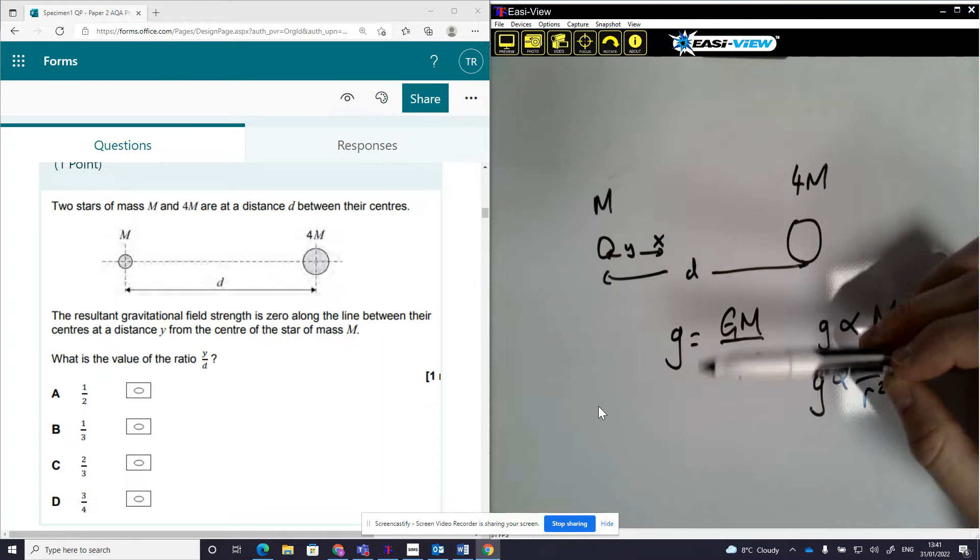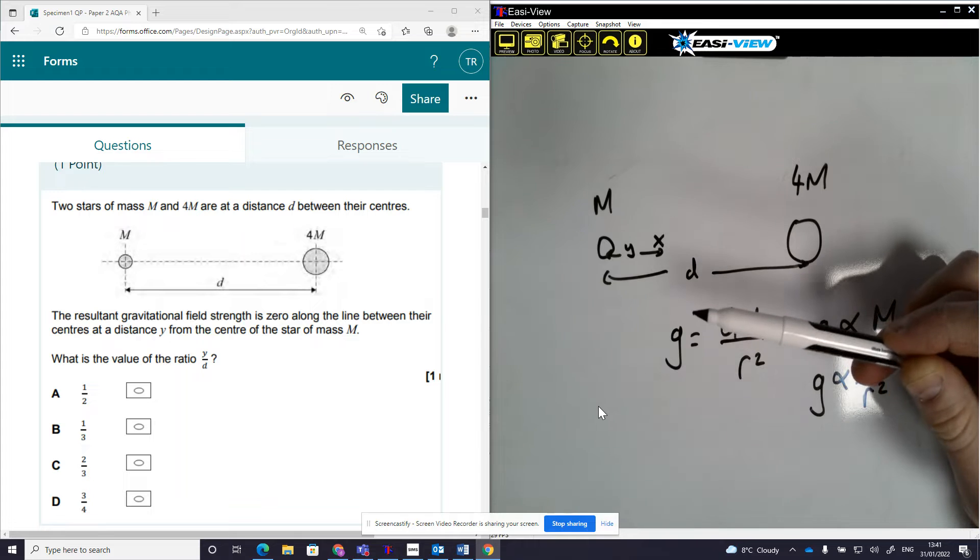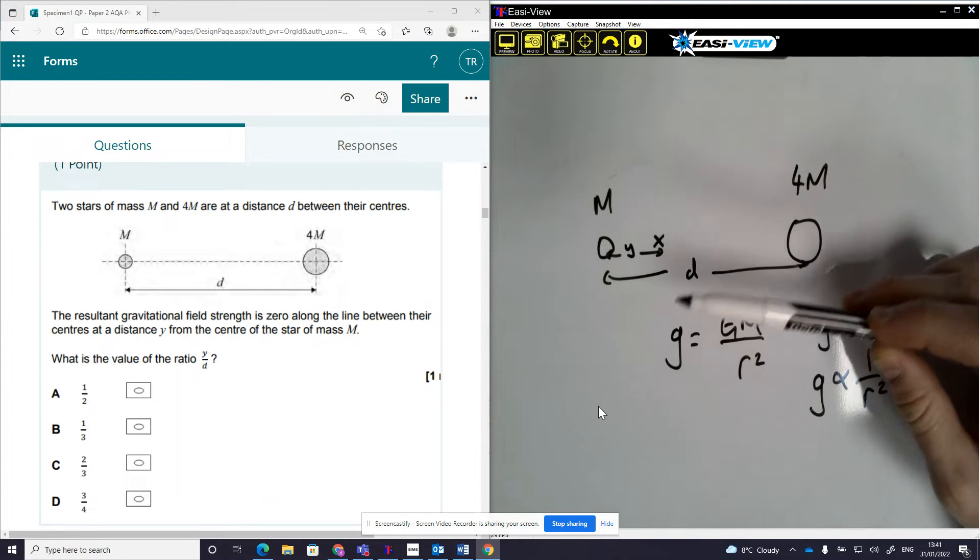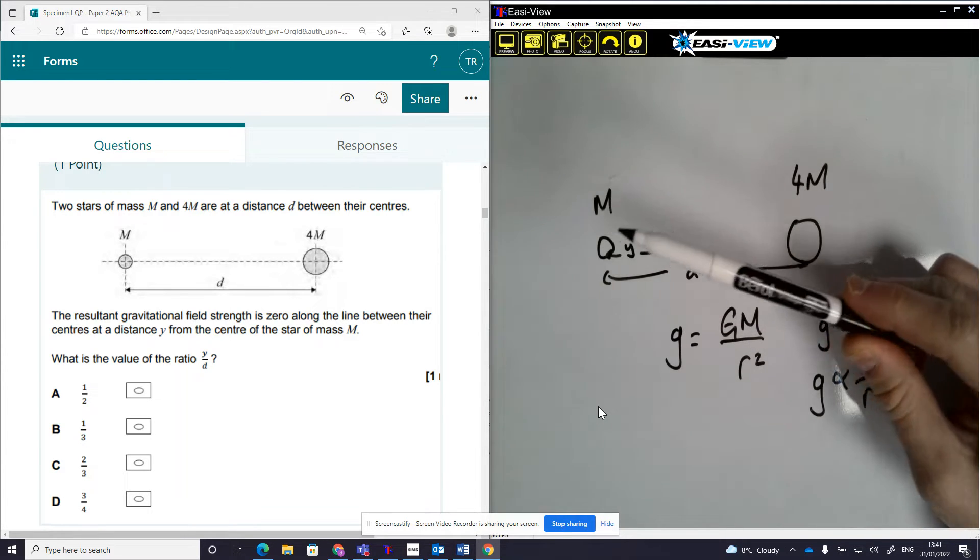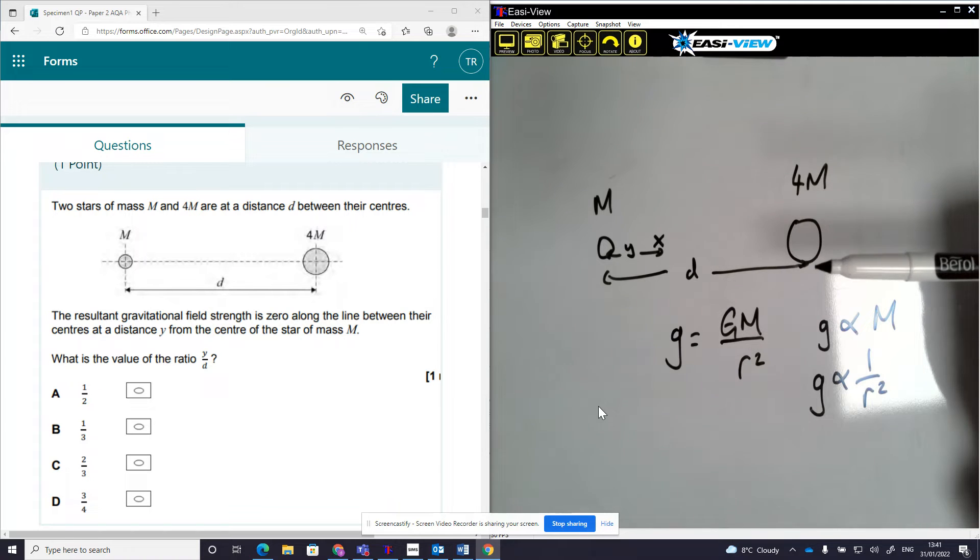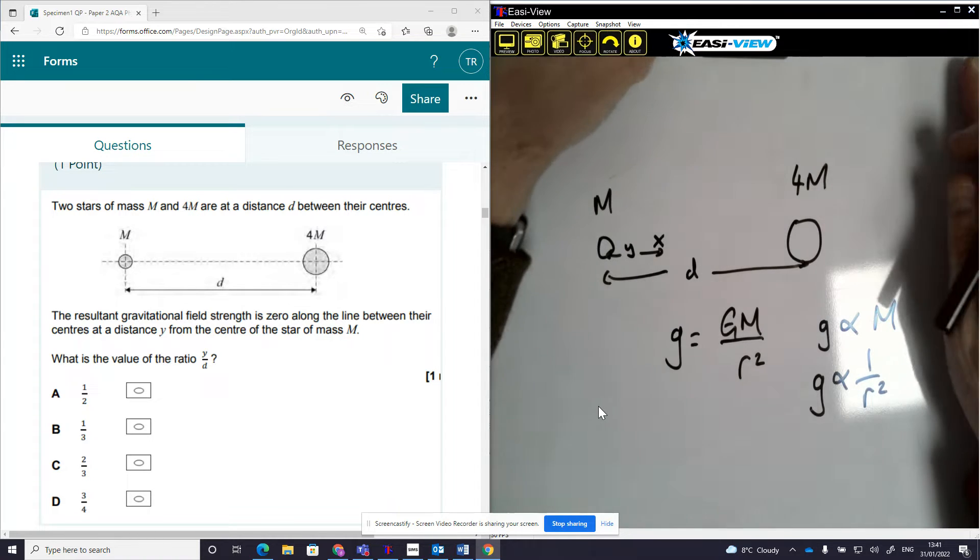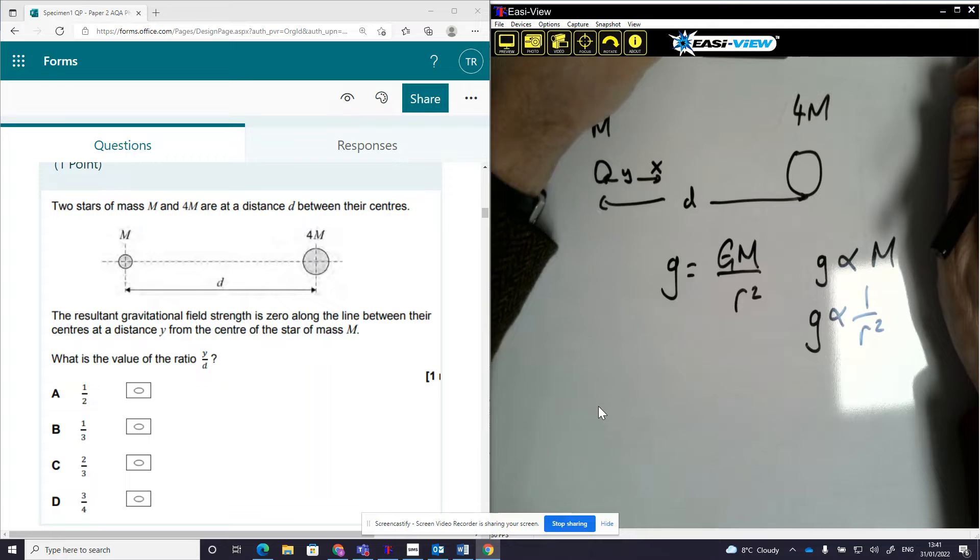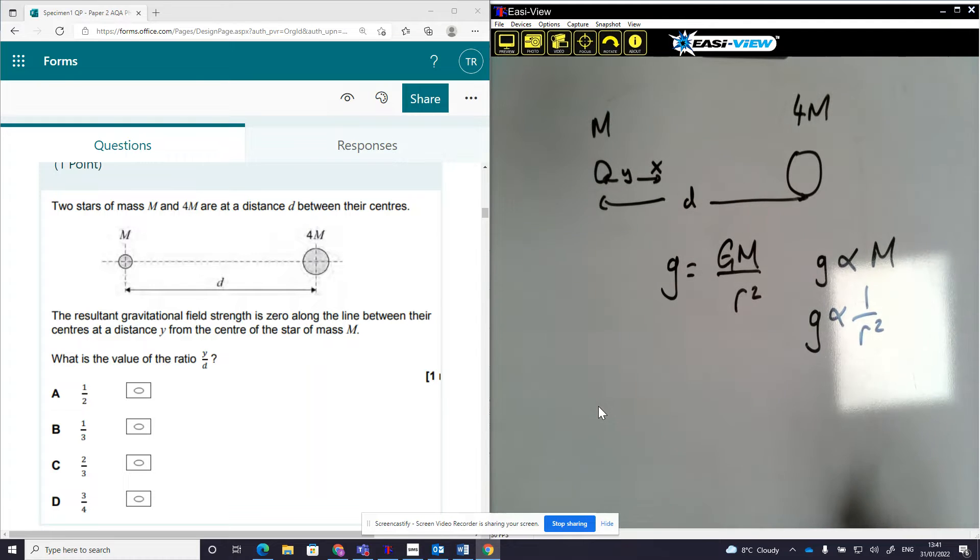So Y over D is going to be less than 1, it's going to be less than a half because it's got to be closer to M than 4M, since 4M has a bigger mass. So if you're running out of time and you're panicking, at least you can rule out a couple of answers because it's got to be less than half.